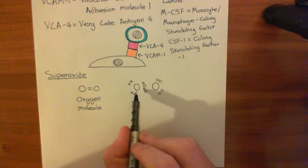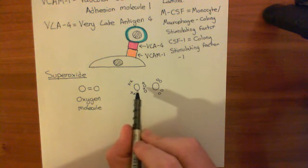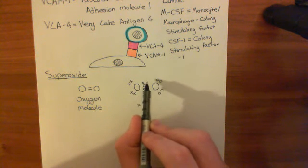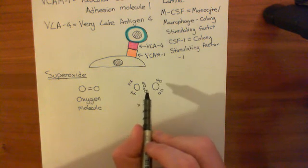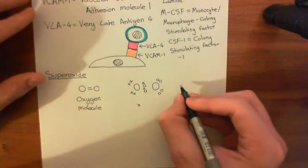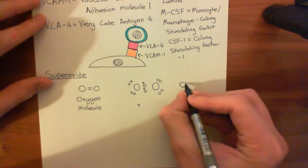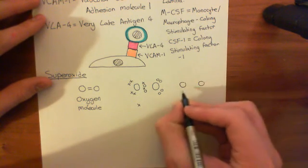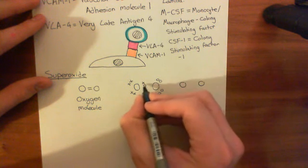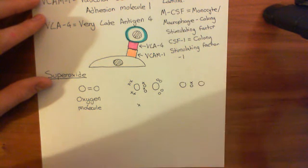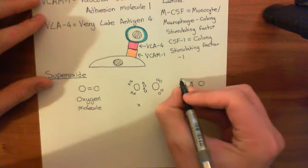Now, what it's going to do is it's going to cause one of these bonds to cleave. So what will happen is, if you think about what would happen if one of these bonds cleaves. So let's say this bond here cleaves. So there's now still one covalent bond between the two oxygen atoms.